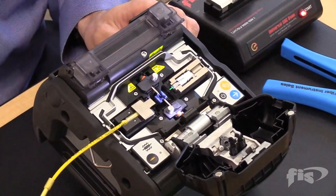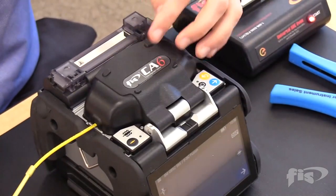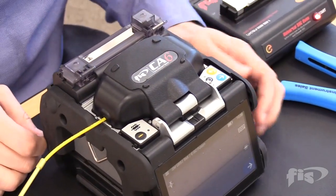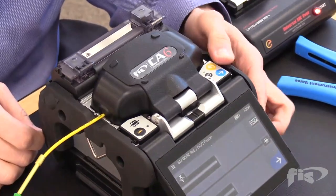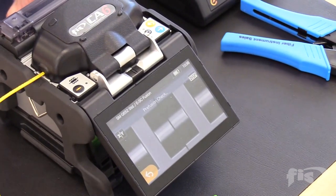Once again, both fibers are past the blue pad of the V-grooves but are not extended far enough to the electrodes. Close the lid. When the left side is done aligning, press the blue arrow button to finish the alignment process and the splicing.